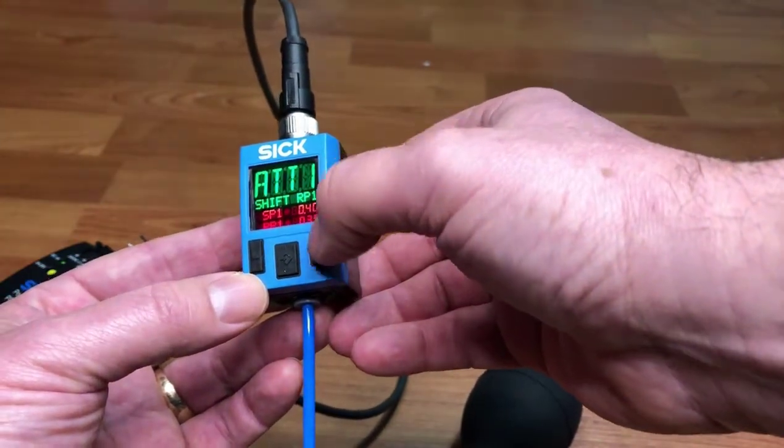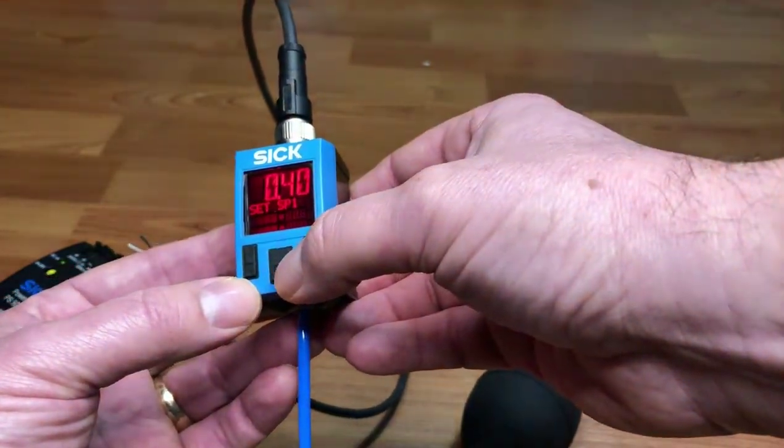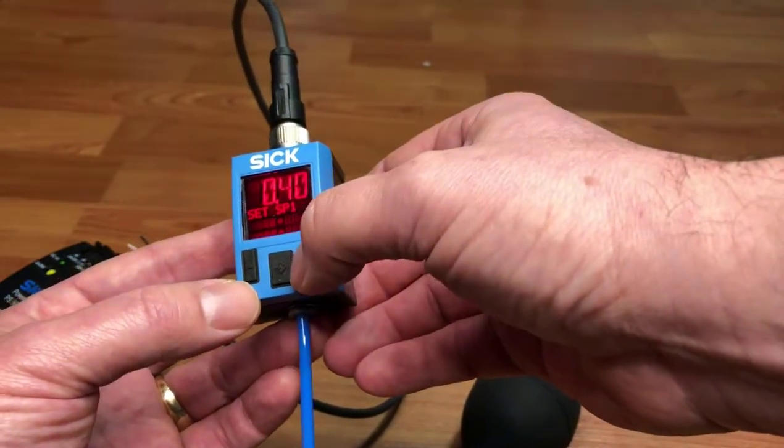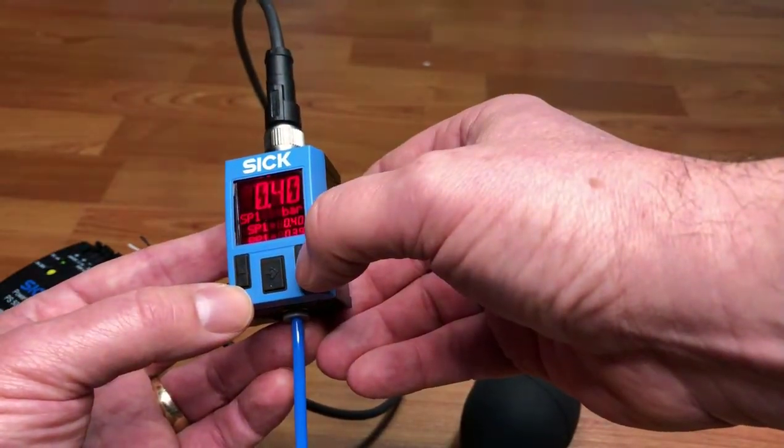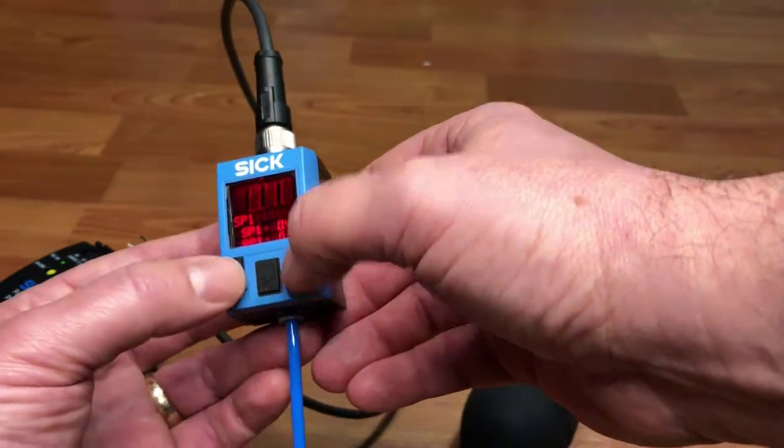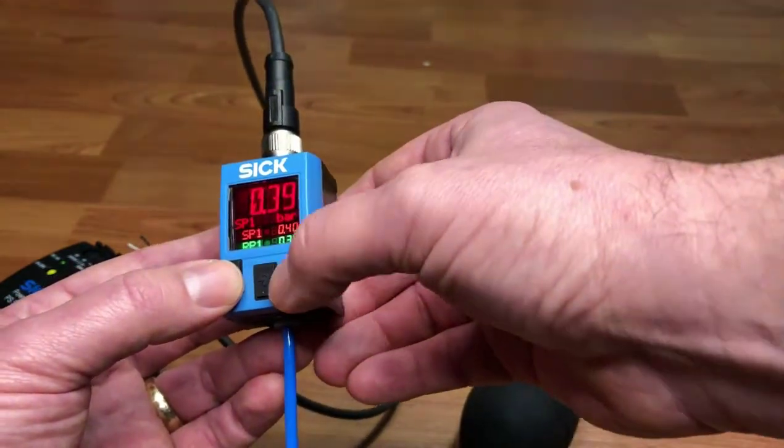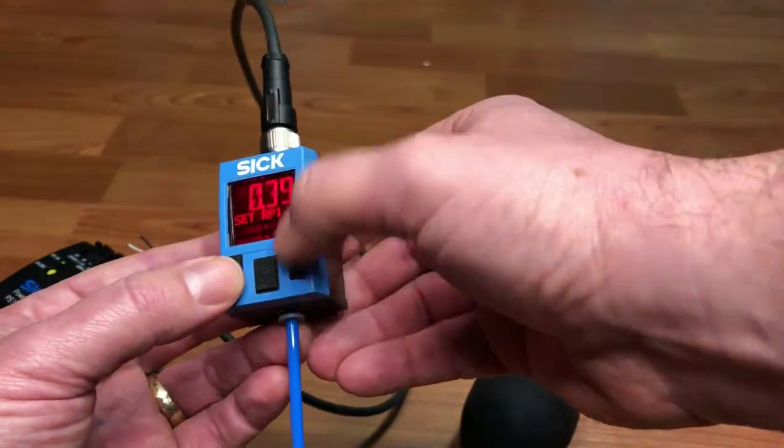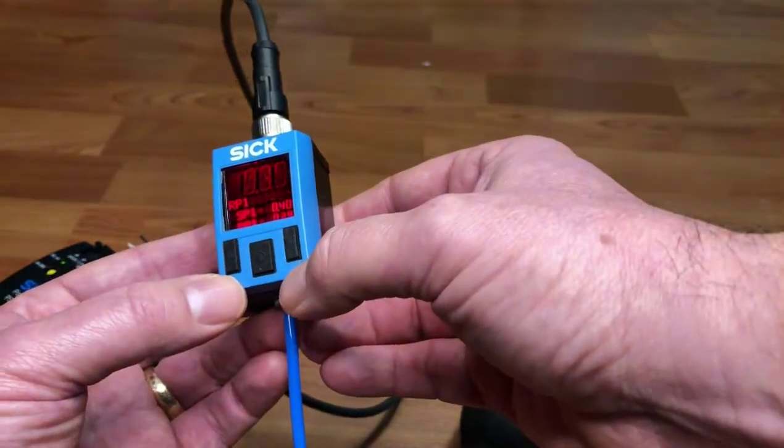We're going to get an attention message. It's basically because we need to shift the release point. The release point's really close—it's 0.39 and our switch point's 0.4, so we're going to adjust that release point. We're going to move the down arrow key instead of the release set point. We're going to change it to release point and press the middle key to go into the release point.